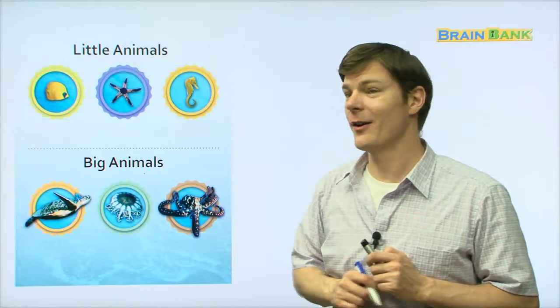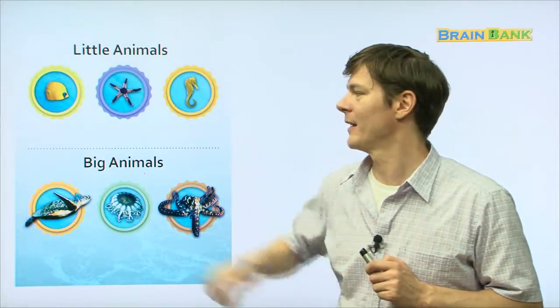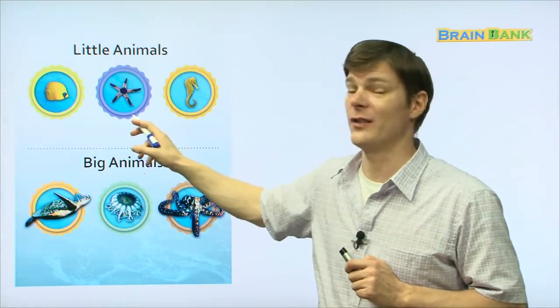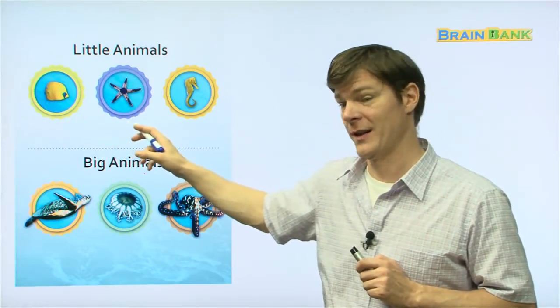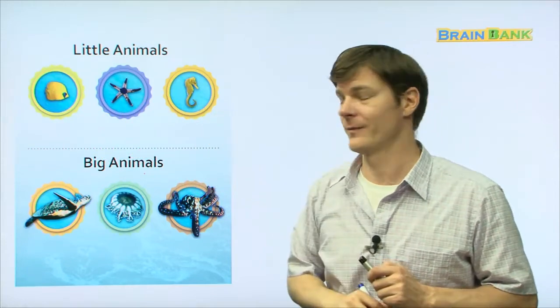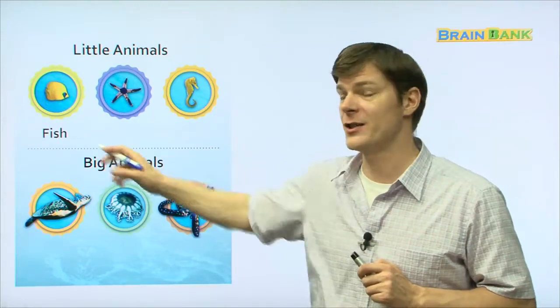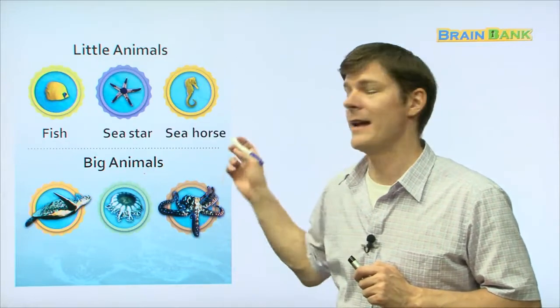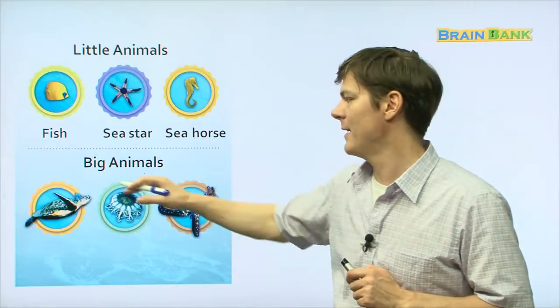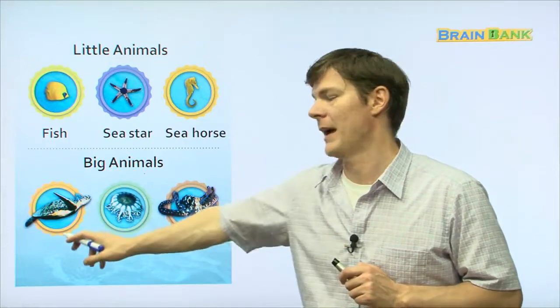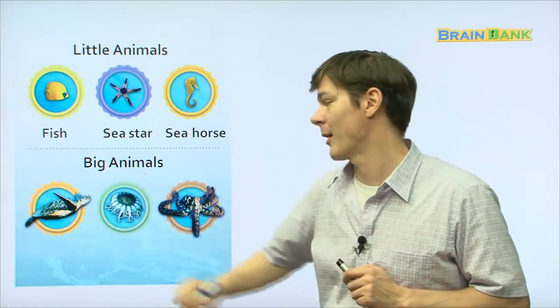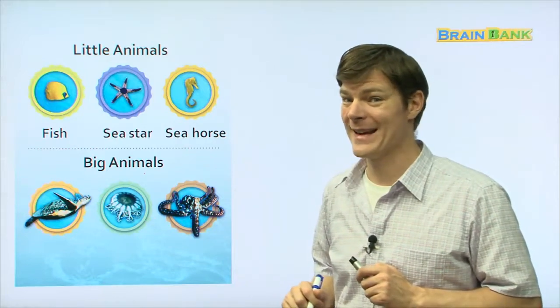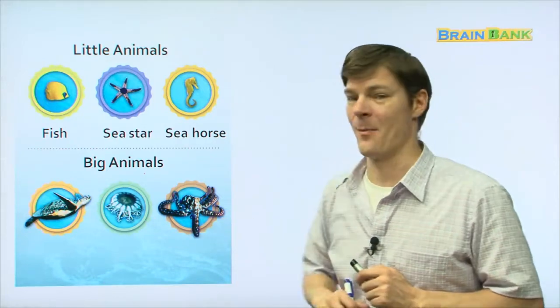Now, here are some little animals and some big animals. Here we have the butterfly fish. Remember? The sea star or starfish. And the seahorse. All right. There's a fish, a sea star, and a seahorse. And then, down here, we have some big animals. We have the sea turtle, the padakobok, the jellyfish, hepari, and the big octopus.